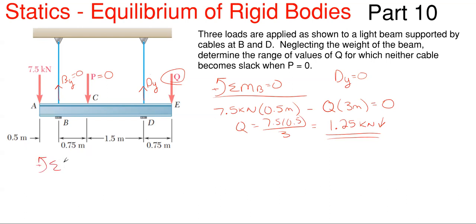So summing about D, and we are going to take B sub Y equal to 0 and see what kind of Q needs to, or what Q needs to be in order for this to happen. So once again, we have our 7.5 kilonewtons. It once again will be rotating counterclockwise, this time about point D. So it'd be positive times the distance to point D, which is 2.75 meters.